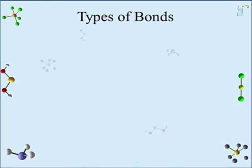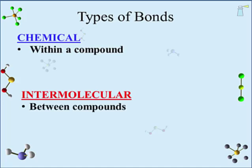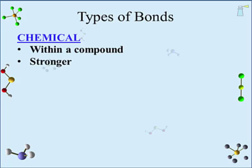Now to bond type. There are two major categories of bonding: chemical and intermolecular. Chemical bonds are within a compound; intermolecular bonds are between compounds. Chemical bonds are stronger. Intermolecular bonds are weaker and include van der Waals, dipole bonding, and hydrogen bonds. These bonding types are discussed in the intermolecular bonding lecture. We will only concern ourselves in this lecture with chemical bonds.